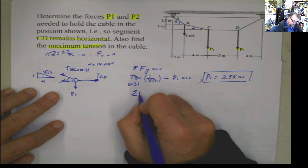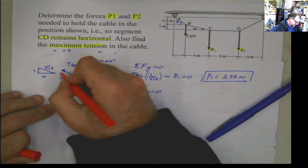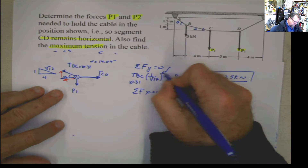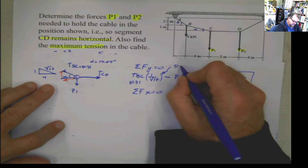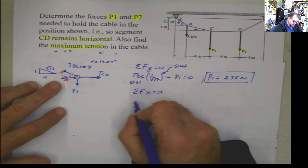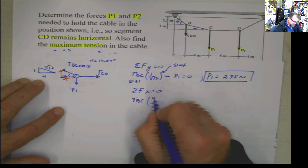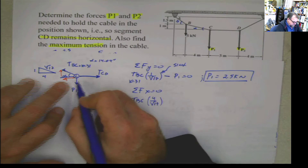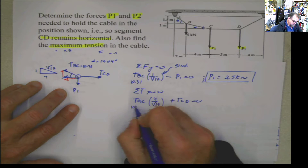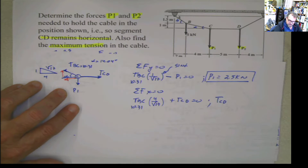Now I can do summation of forces in x equals 0. I have the x component of TBC. In this case, I use cosine alpha — TBC cosine alpha. But cosine alpha is also 4 divided by square root of 17. Plus TCD equals 0. TBC is 10.31, which allows us to calculate TCD. And TCD is going to be 10 kilonewtons.